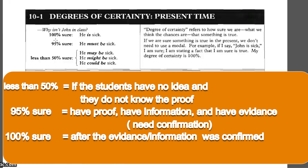Kenapa cuma 95%, bukan 100%? Karena hal tersebut hanya terlihat saja, belum dipastikan. Untuk 100%, kita butuh konfirmasi. Ternyata salah seorang siswa membuka WhatsApp dan melihat foto John yang sedang sakit. Ini adalah bentuk konfirmasi. Barulah kita menggunakan level 100% degree of certainty in the present: 'He is sick' — means 100% sure that John is sick.